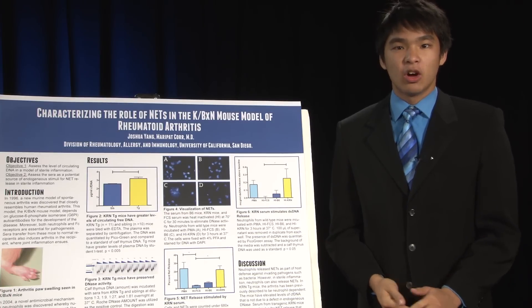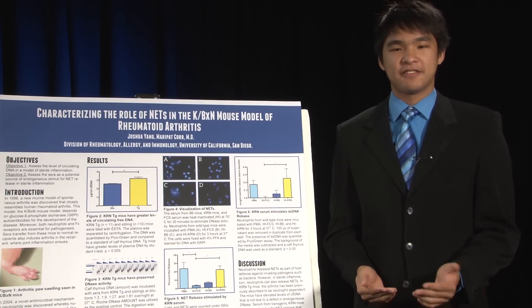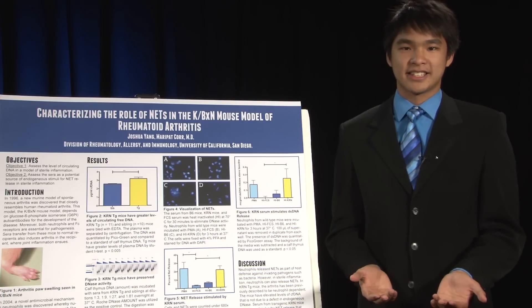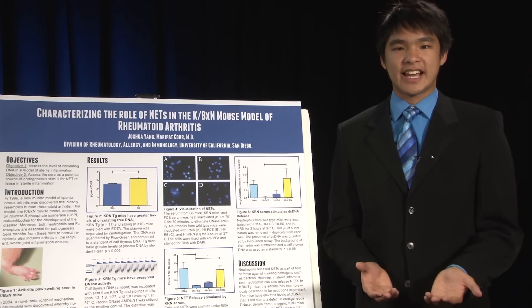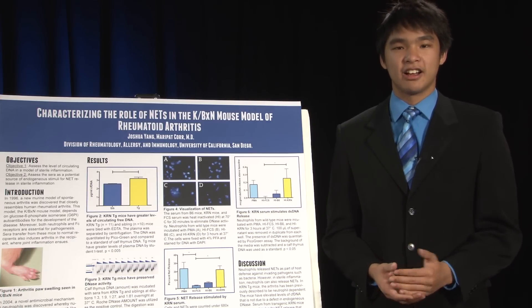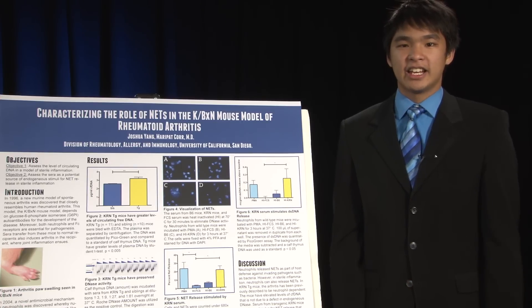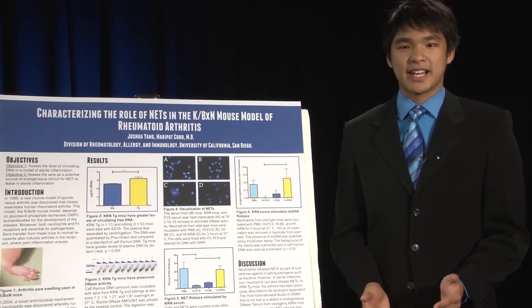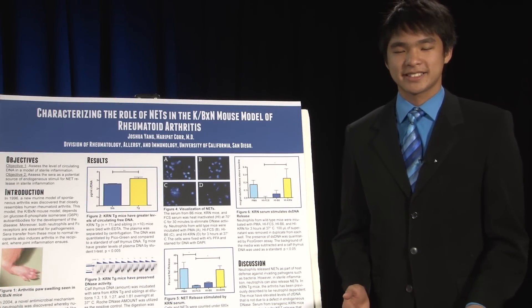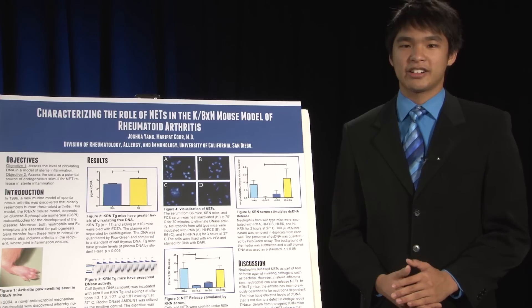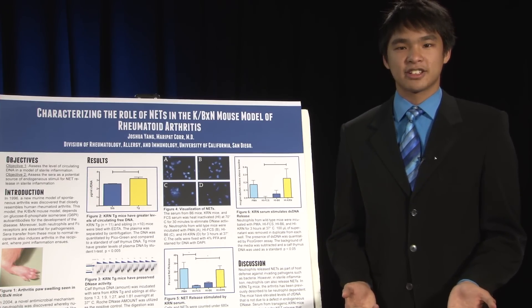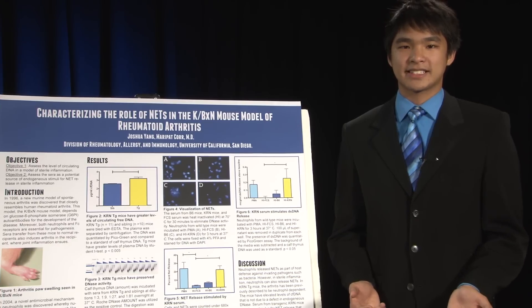There are many possible reasons for this. One of them could be that KBXN mice have a deficiency in DNase activity. In order to test this theory, we used a DNase assay where we titrated the serum of KBXN mice and wild-type sibling mice in order to determine the relative levels of DNase activity. What we found was that KBXN mice have similar levels of DNase activity compared to wild-type sibling mice, or in some cases, had even greater activity. Thus, there had to be some other reason for the increased levels of circulating free DNA that we saw in the KBXN mice.